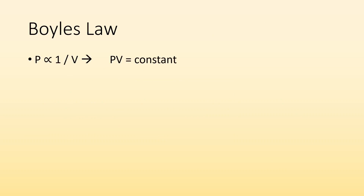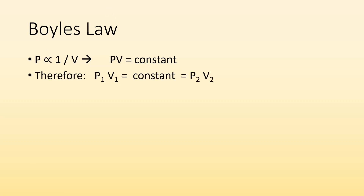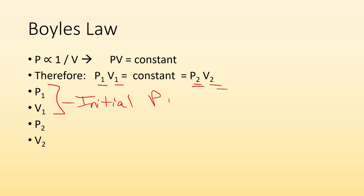Boyle's Law states that the pressure of a given mass of an ideal gas is inversely proportional to its volume at a constant temperature. If you keep temperature the same, as you increase pressure, the volume of the gas will go down. Mathematically, pressure is proportional to 1 over volume, meaning P times V equals a constant. So P1 times V1 equals P2 times V2, where 1 is initial and 2 is the new condition.